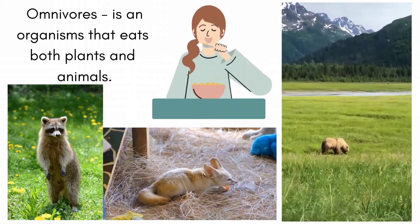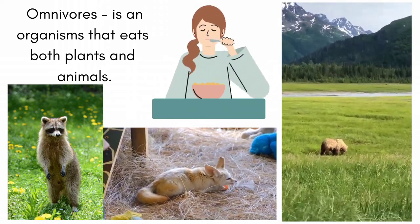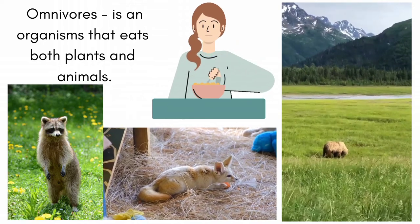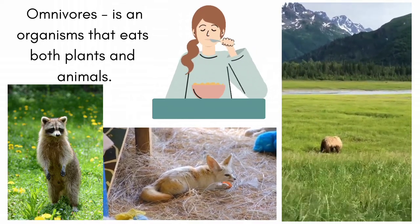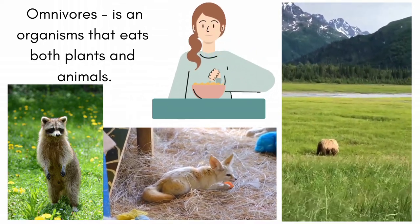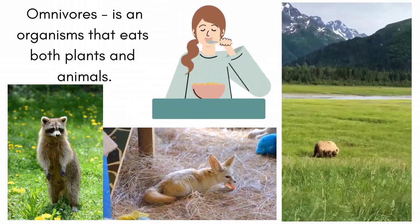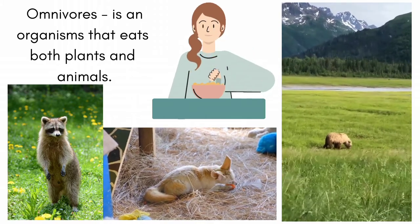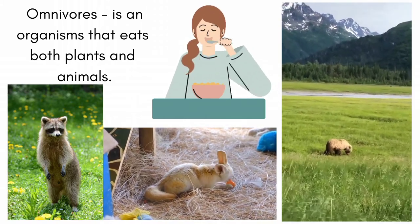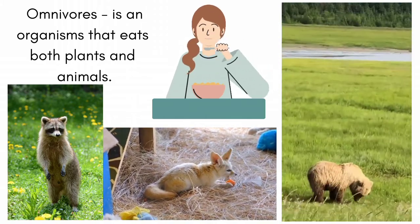Omnivores are a diverse group of animals. Examples of omnivores include bears, birds, dogs, raccoons, foxes, certain insects, and even humans.